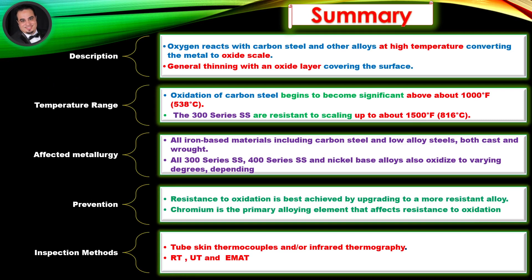Summary. Oxygen reacts with carbon steel and other alloys at high temperature, converting the metal to oxide scale, resulting in general thinning with an oxide layer covering the surface. Temperature range: oxidation of carbon steel begins to become significant above about 1,000 degrees Fahrenheit. The 300-series stainless steels are resistant to scaling up to about 1,500 degrees Fahrenheit.